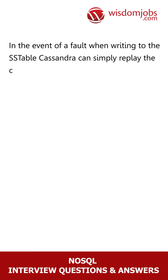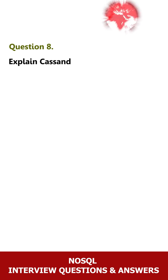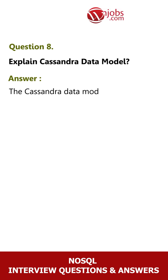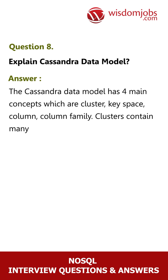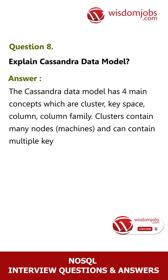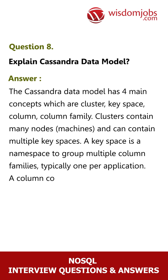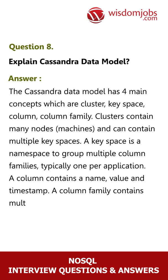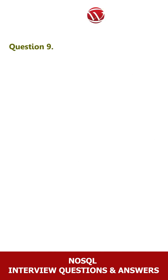In the event of a fault when writing to the SSTable, Cassandra can simply replay the commit log. Question 8: Explain the Cassandra data model. Answer: The Cassandra data model has four main concepts: cluster, key space, column, and column family. Clusters contain many nodes (machines) and can contain multiple key spaces. A key space is a namespace to group multiple column families, typically one per application. A column contains a name, value, and timestamp. A column family contains multiple columns referenced by a row key.